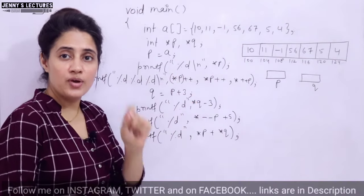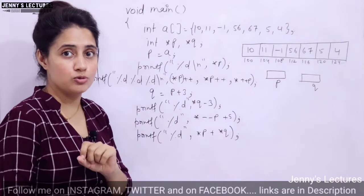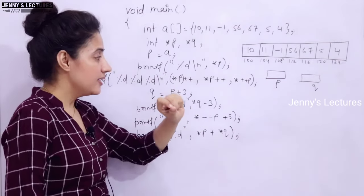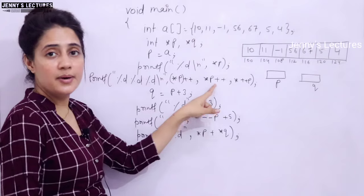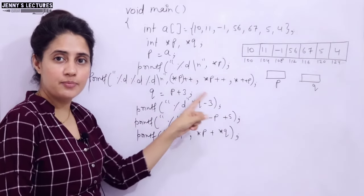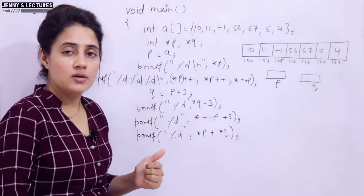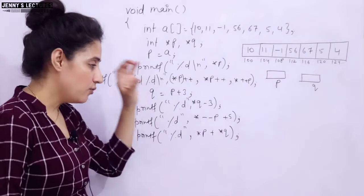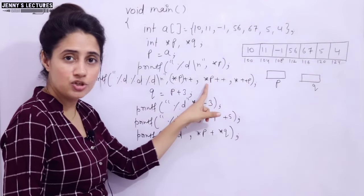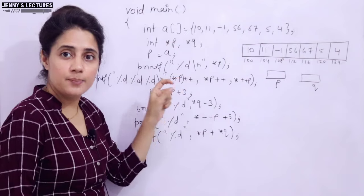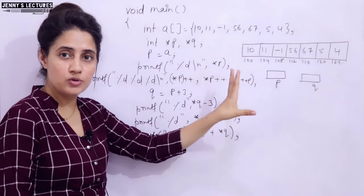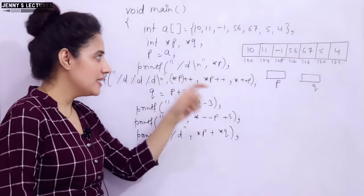This type of question is very important and very tricky, yet very simple. When you combine the increment/decrement operator with the indirection operator, these types of questions are generally asked in interviews. You just have to concentrate. If you know the working of these operators, as well as their precedence and associativity discussed in previous videos, you can check those out first and you will easily get it.